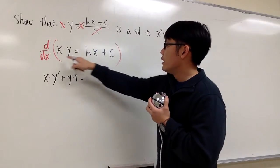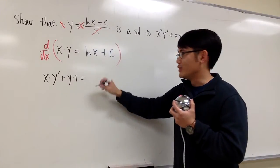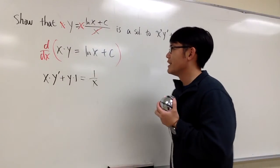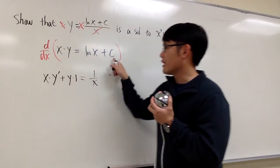And this is equal to, and now we have to differentiate ln x with respect to x. So we just have 1 over x. And then what's c? It's a constant, right? If you differentiate a constant, it's zero.